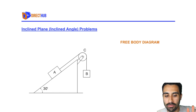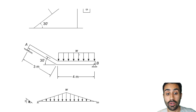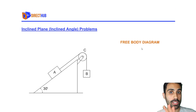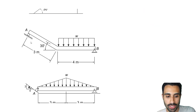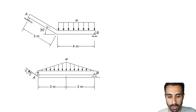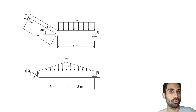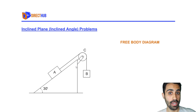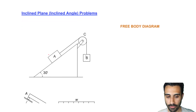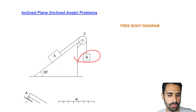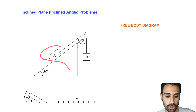We have three inclined angle problems where we'll draw the free body diagram for beam AB. Try these on your own and check your work with mine to learn from your mistakes. We'll start with the free body diagram for box A — that's the tricky part — box B is easy.